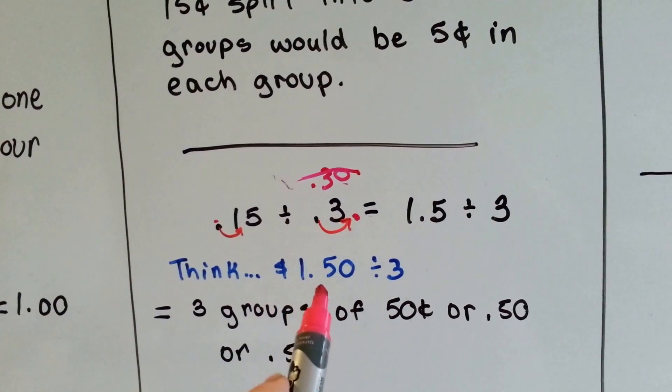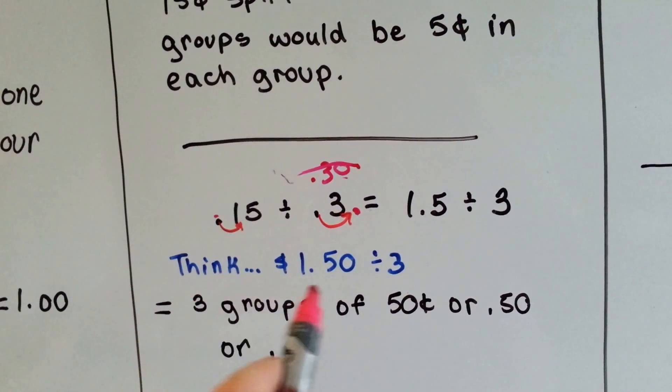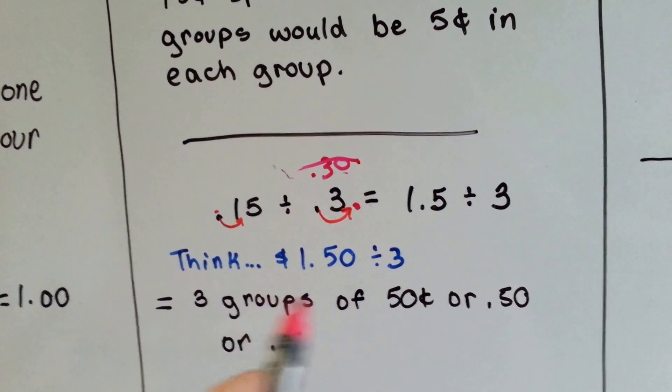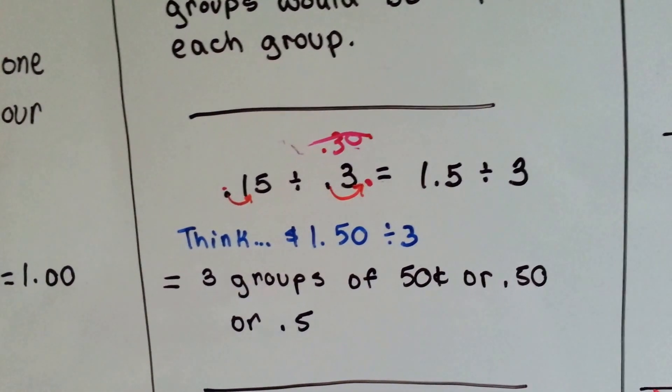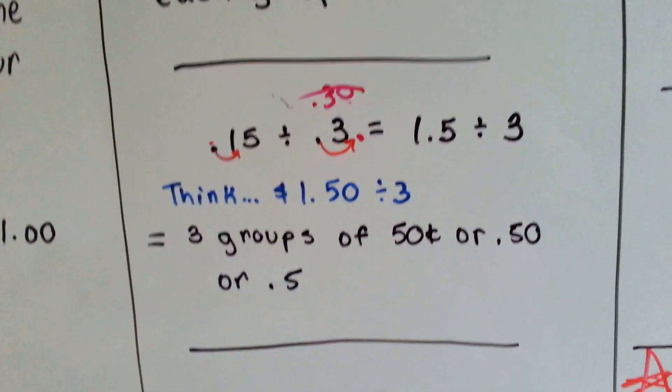What we have is $1.50, because we've moved it over, divided by 3. So if you had $1.50 and you wanted to split it between three people, you could do it very easily. Each person would get 50 cents. That's easy.